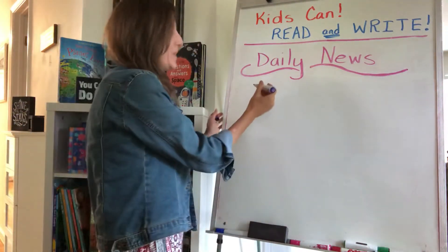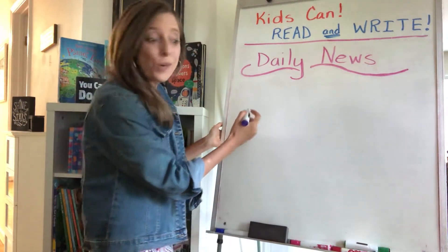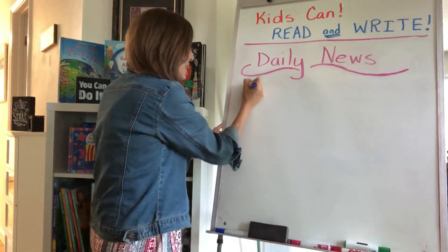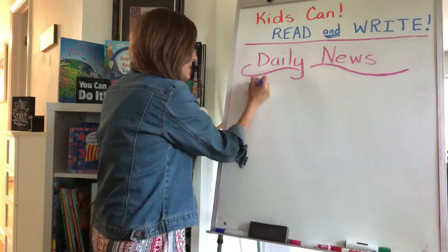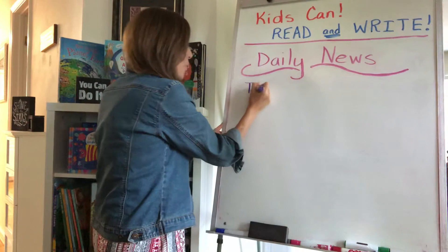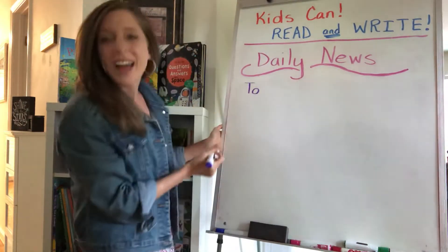All right, today — how do you spell 'two'? Capital, because it's the beginning of our sentence. T-O. Capital T-O. Two.